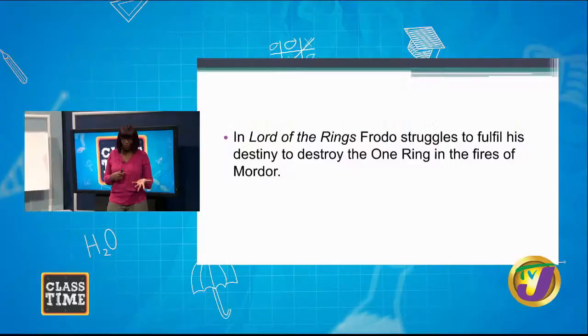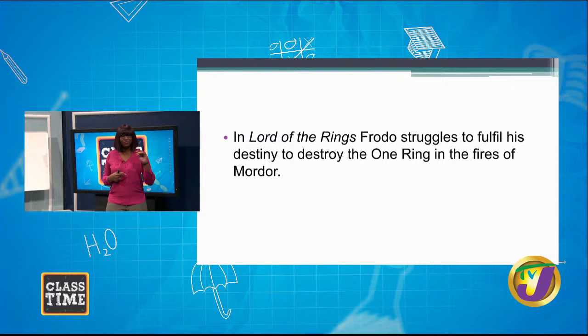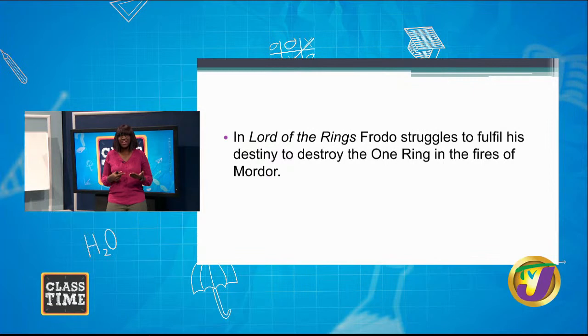Examples of man versus fate: in Lord of the Rings, it is foretold that Frodo has to be the one to carry the ring and destroy it in the fires of Mordor. Throughout the novels, we see him going through different situations with the ultimate goal of being the one to destroy the one ring because it was destined for him. All along there are things that fight against that, setting up the whole question of his fate — ultimately, he does end up fulfilling and resolving the conflict of destroying the ring.